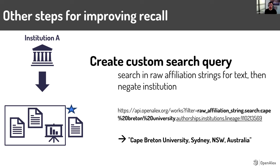That's an example of how you can get really specific in trying to find these issues. For most people, you won't need to do this — our goal is to have the highest recall and precision possible for all institutions around the world without any further manual curation. But we also know that many institutions want to refine it even further, and anything you do to identify those errors and give us that on-the-ground information, we can use to make OpenAlex better for everyone in the world.